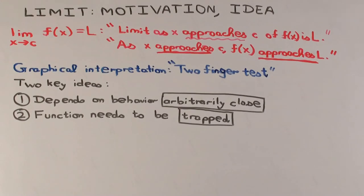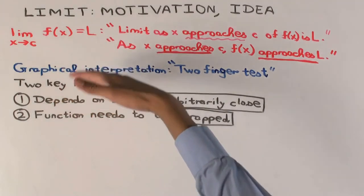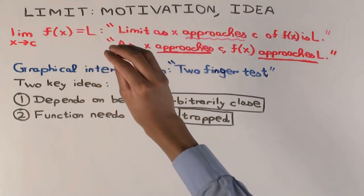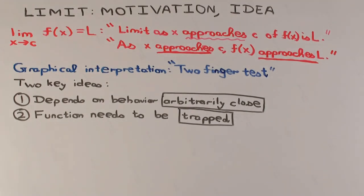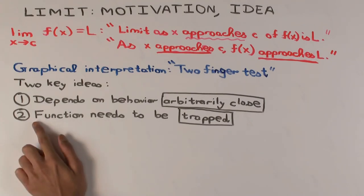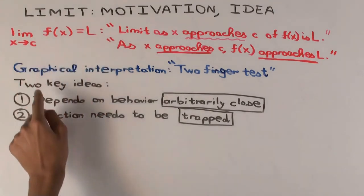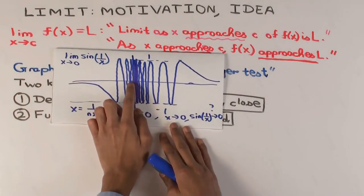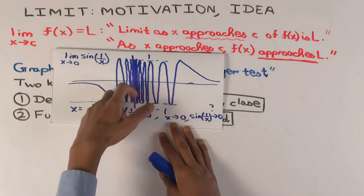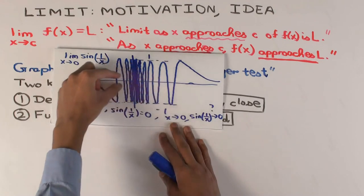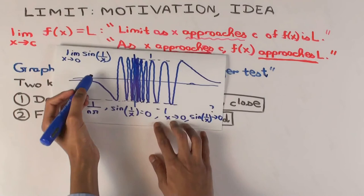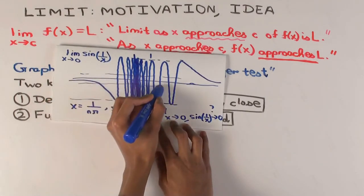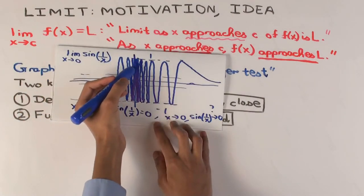Now you have the question: what should be the correct definition of limit? Should it mean that f(x) approaches the point but maybe goes in and out, close and far? Or should it mean it approaches and stays close? This is a judgment you make in the definition, and people who tried defining this chose the latter — it should come close and stay close. That's key idea number two: for a function to have a limit at a point, the function needs to be trapped near the limit as you get close to the point in the domain.